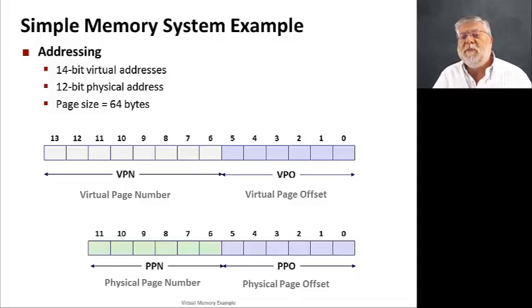It would be more something on the order of 8 kilobytes, for example. So, if we have these values, then here is our 14-bit virtual address and here's our 12-bit physical address.